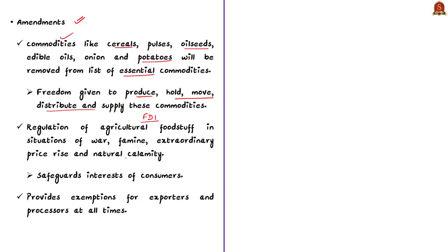The proposed amendment also safeguards consumer interests by providing for regulation of such agricultural foodstuff in situations of war, famine, extraordinary price rise, or natural calamities. The amendment also provides exemptions for exporters and processors at all times to ensure investments in agriculture are not discouraged.